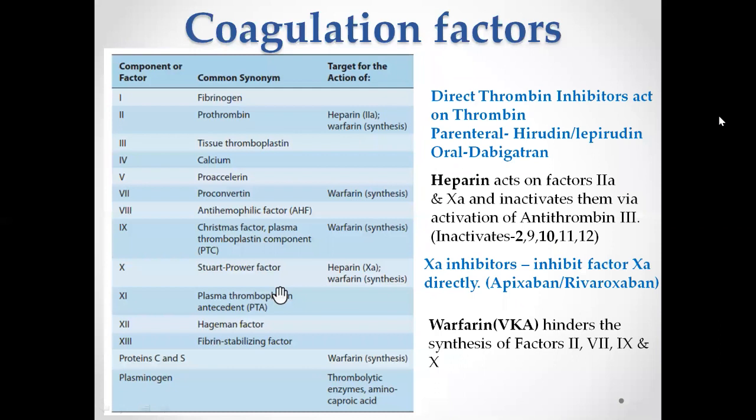Now we come to coagulation factors. Today we'll discuss coagulation factors in relation to the targets of various anticoagulant drugs. Heparin acts on factor Xa and factor IIa, inactivating them through activation of antithrombin 3. Apart from factors IIa and Xa, heparin also helps inactivate factors 9, 11, and 12. Warfarin, also called vitamin K antagonist or VKA, hinders the synthesis of factors 2, 7, 9, and 10.